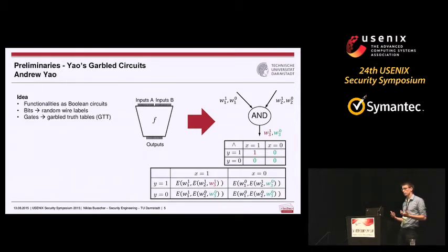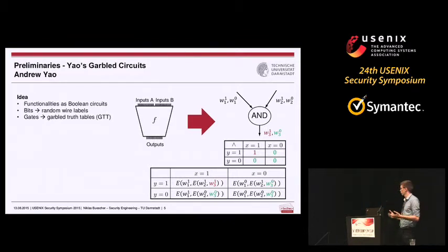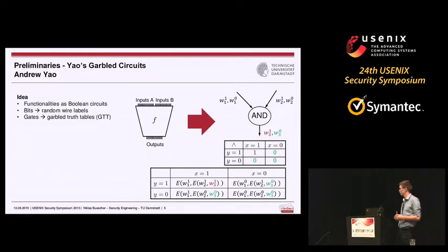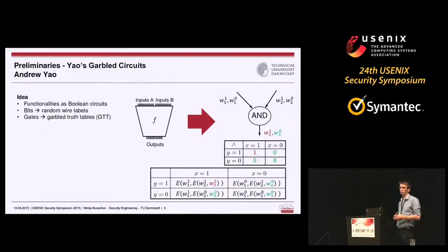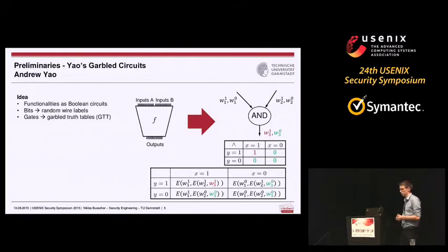Garbled truth tables represent the encrypted form of a truth table. For a boolean AND gate, an input of one and one gives an output of one. For the garbled table, if we have an input label representing one and another input label representing one, we encrypt the output label representing one under these labels. We can do that for all entries in the table, encrypting a gate in the circuit.